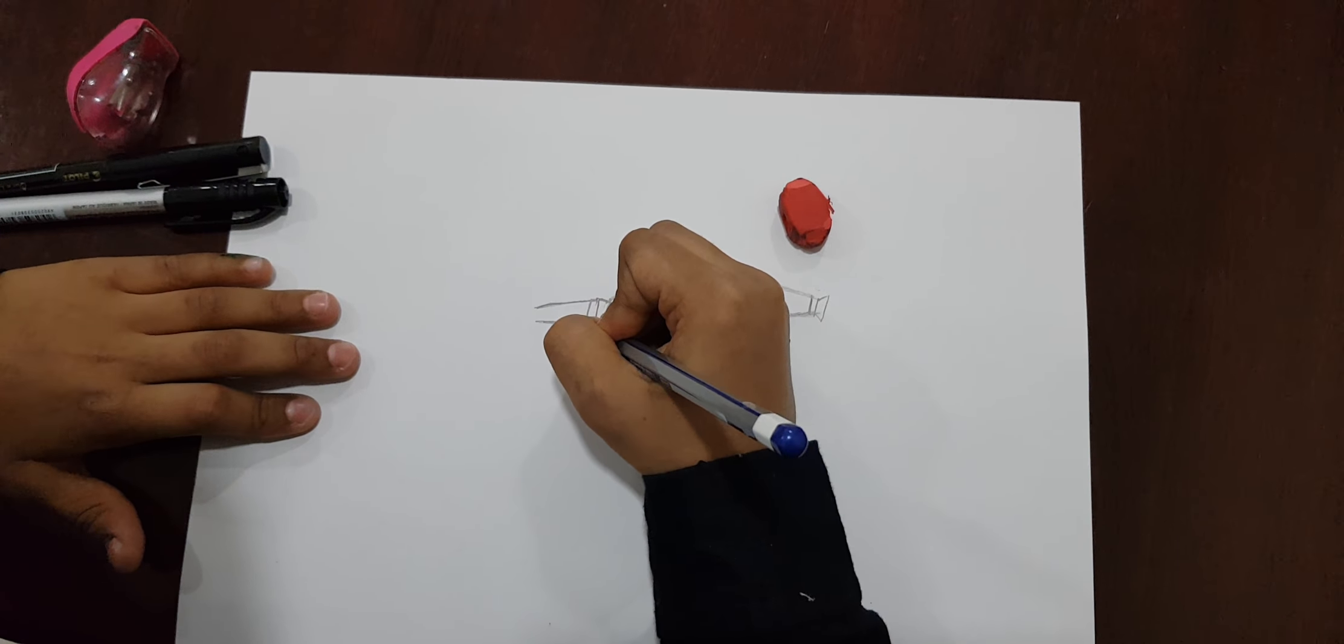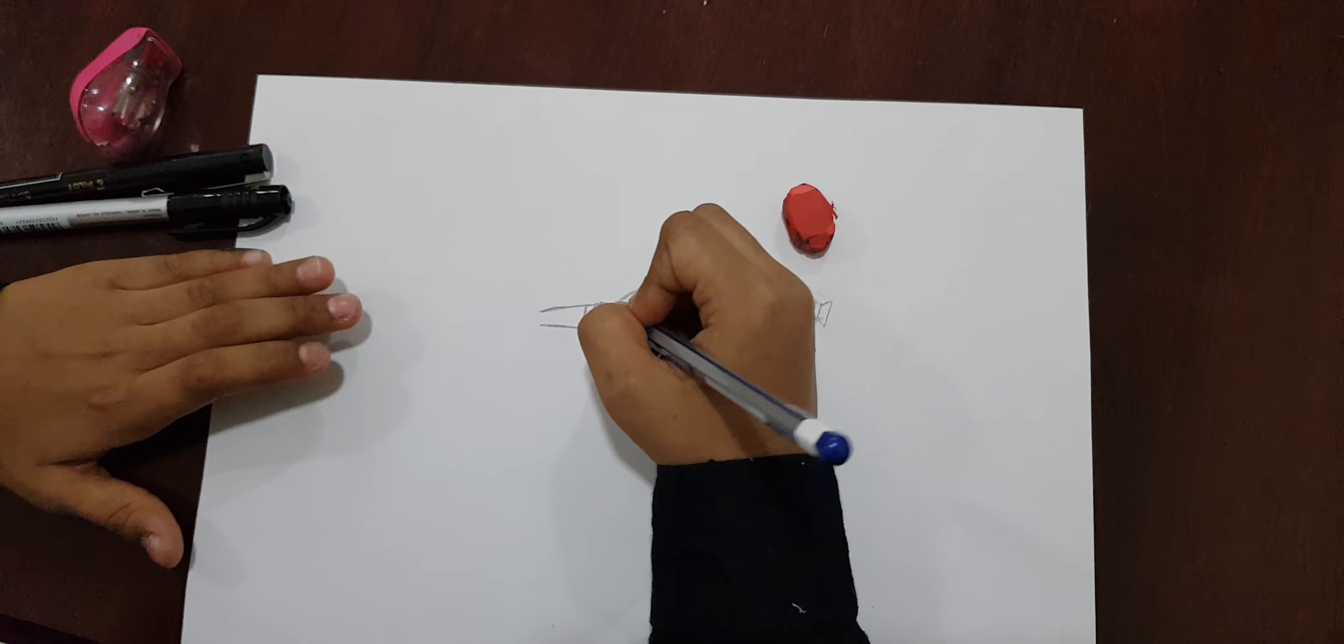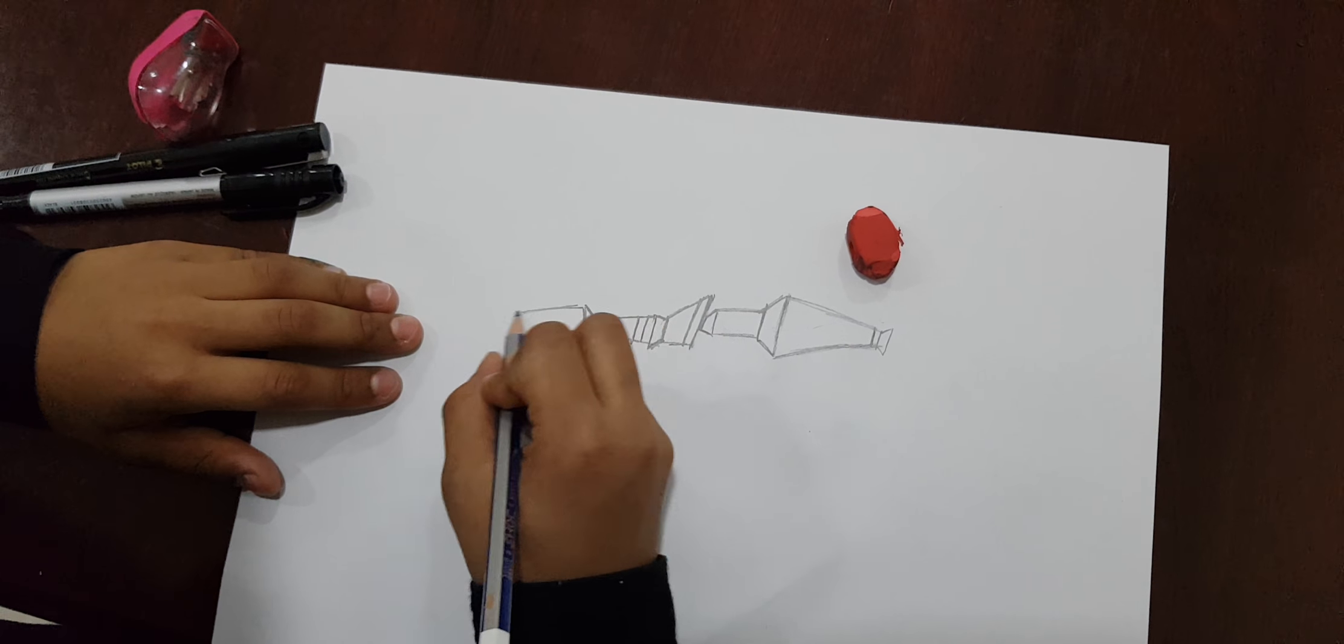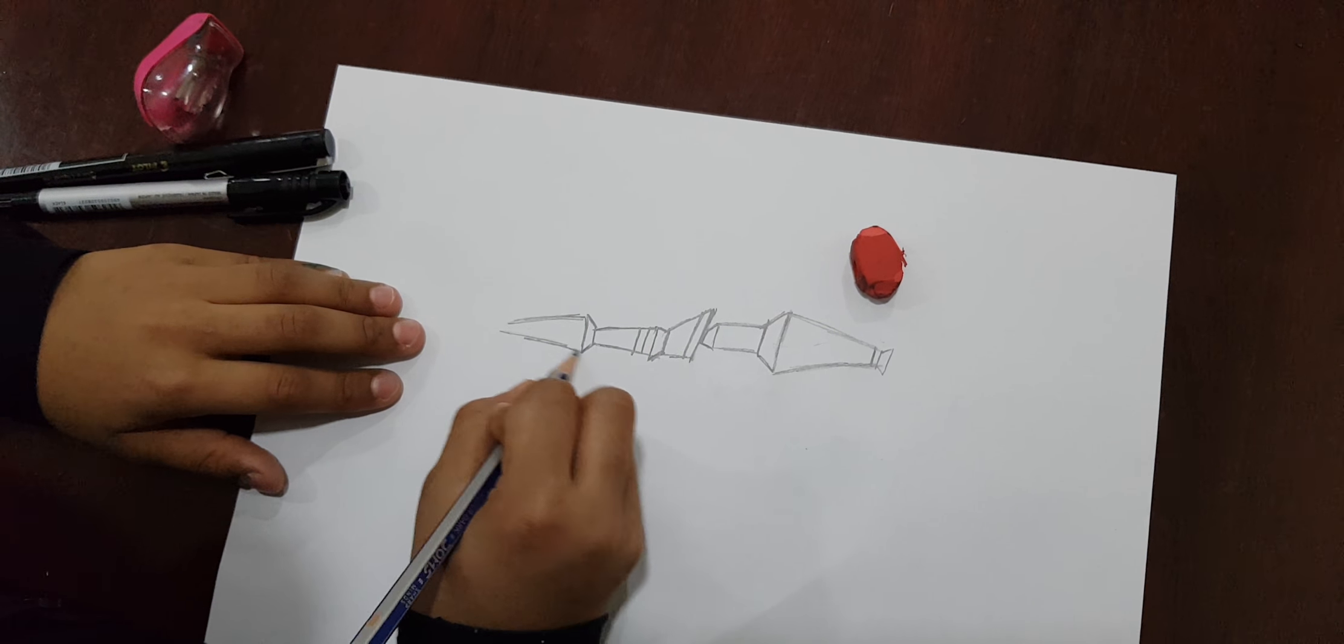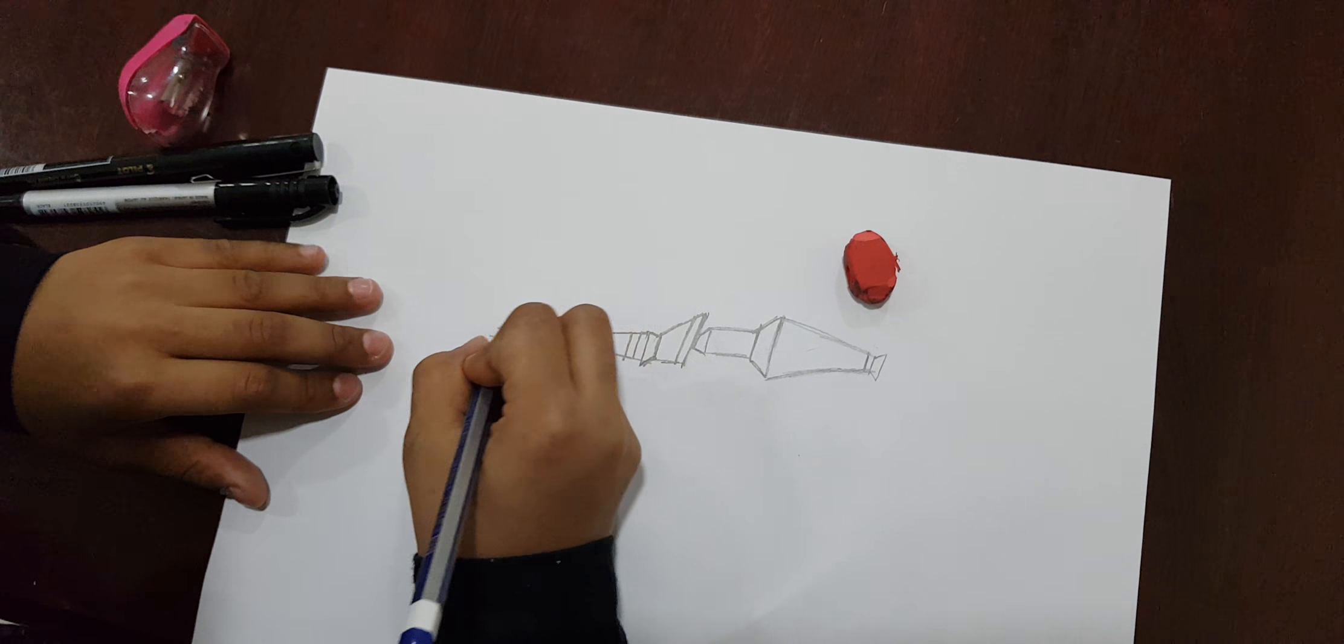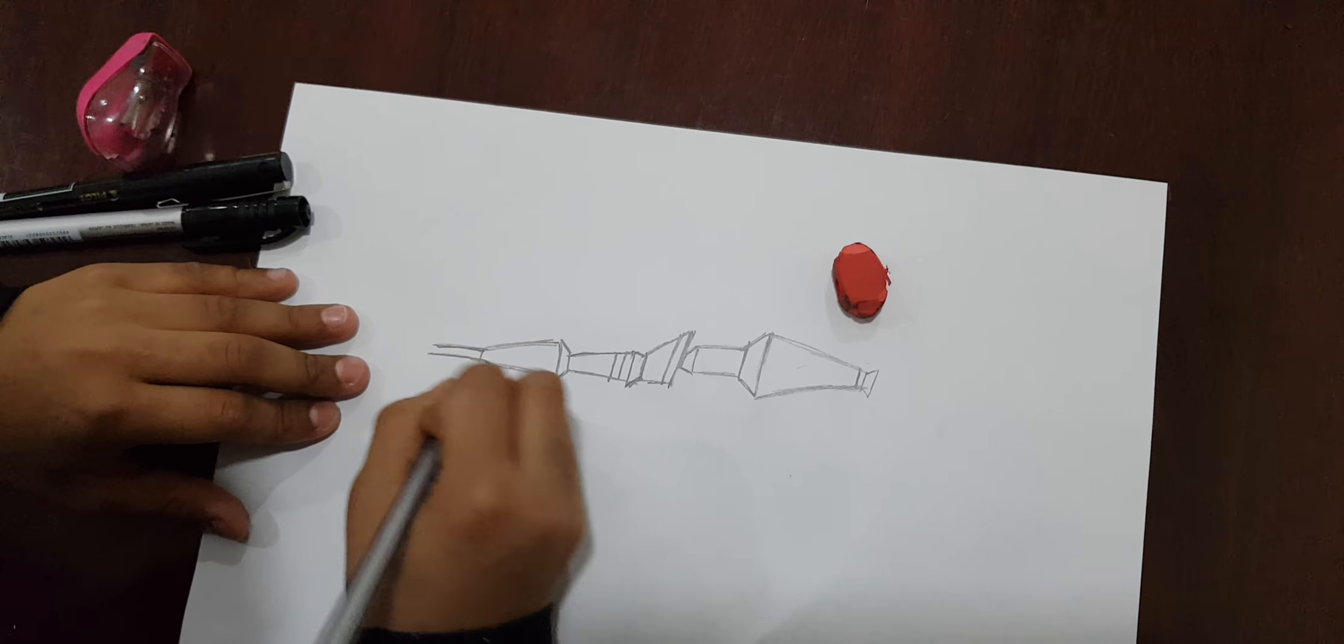Over there, make a straight line. Straight line. Slanting line. Like that. Make a straight line.